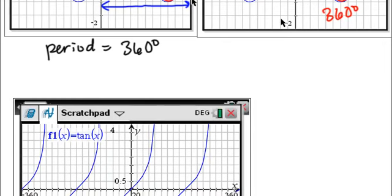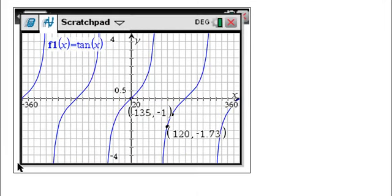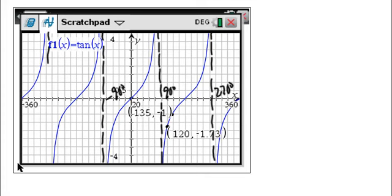But when you look at tangent, the tangent graph has asymptotes at 90 and at 270 and at negative 90 and at negative 270.